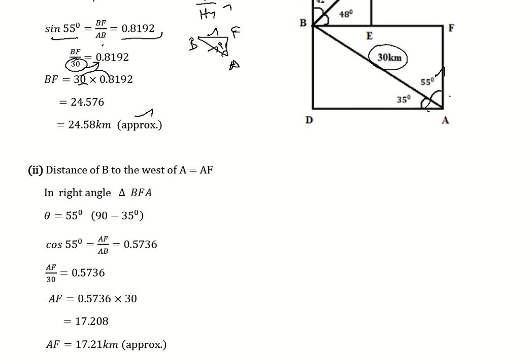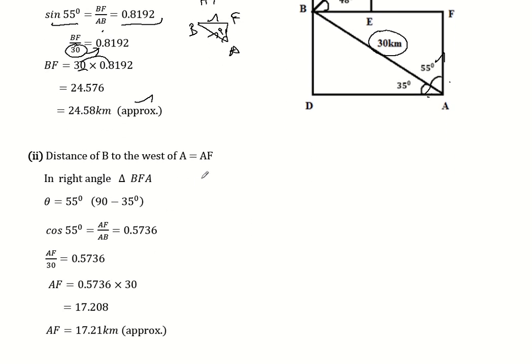Distance B to the west of A: theta is equal to 55. Now let's go to cos theta, adjacent by hypotenuse. Hypotenuse means AB. Cos 55 is equal to AF over 30, which equals 0.5736. So AF equals 0.5736 times 30, which is 17.208. AF is 17.21 kilometers approximately.